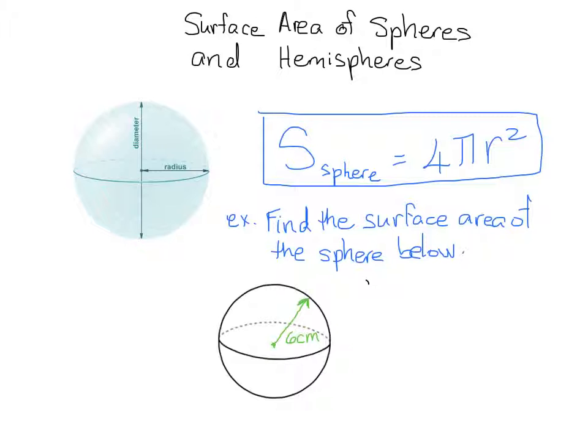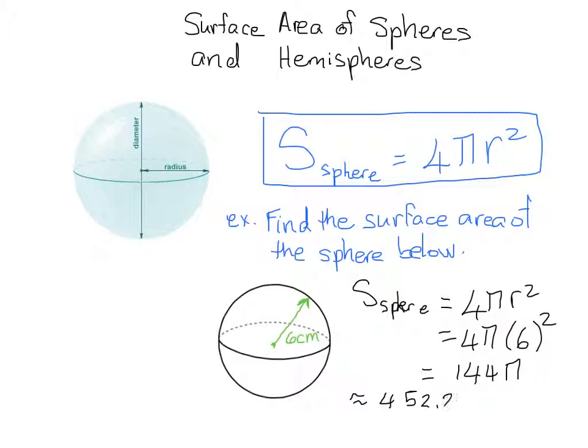So in order to figure out the surface area of our sphere, we're going to go ahead and substitute into our formula. And we get 4πr², which is 4π times 6 squared. When you work that out, you should get 144π centimeters squared, which is approximately equal to, if you do it on your calculator, 452.2 centimeters squared. And that's how you find the surface area of a sphere.